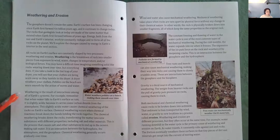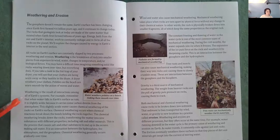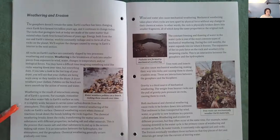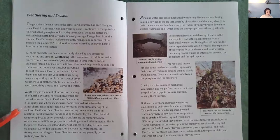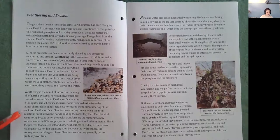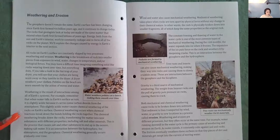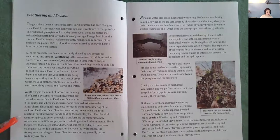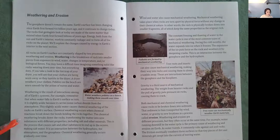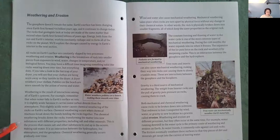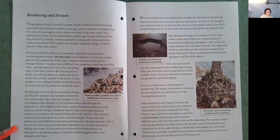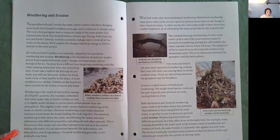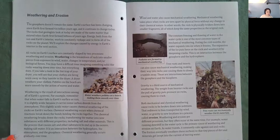Weathering is the result of interactions among all of Earth's systems. For example, remember that when water falls to Earth's surface as rain, it is slightly acidic because it carries some carbon dioxide from the atmosphere. This slightly acidic water causes chemical weathering of the rocks on Earth's surface. This is the process that causes salt and other substances to end up in the oceans making saltwater. It is an interaction between the hydrosphere, the atmosphere, and the geosphere.